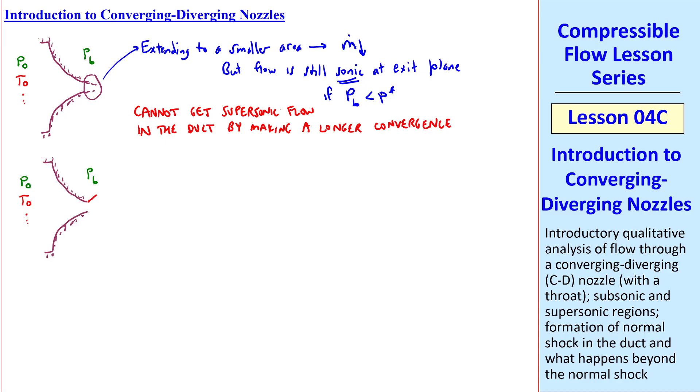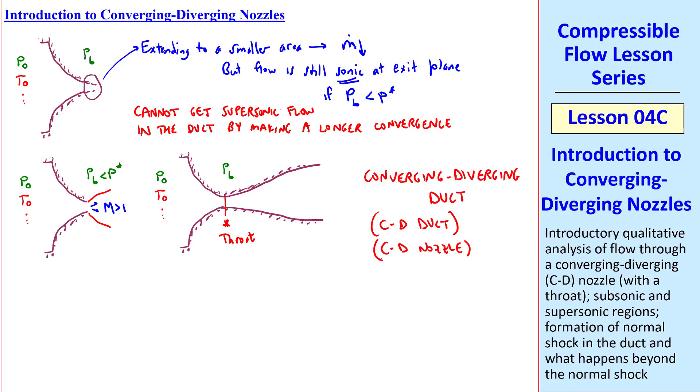But also recall from the previous lesson that if Pb is less than P star, the flow suddenly expands, making the Mach number greater than 1. Well, let's do a similar thing, except in a more controlled way. Namely, let's let this exit be a throat, where the duct itself expands downstream of the throat. If this flow is choked, and we simply add a diverging part of the duct, the flow here will become supersonic, just like it did here. This is called a converging-diverging duct, or a CD duct, or a CD nozzle.